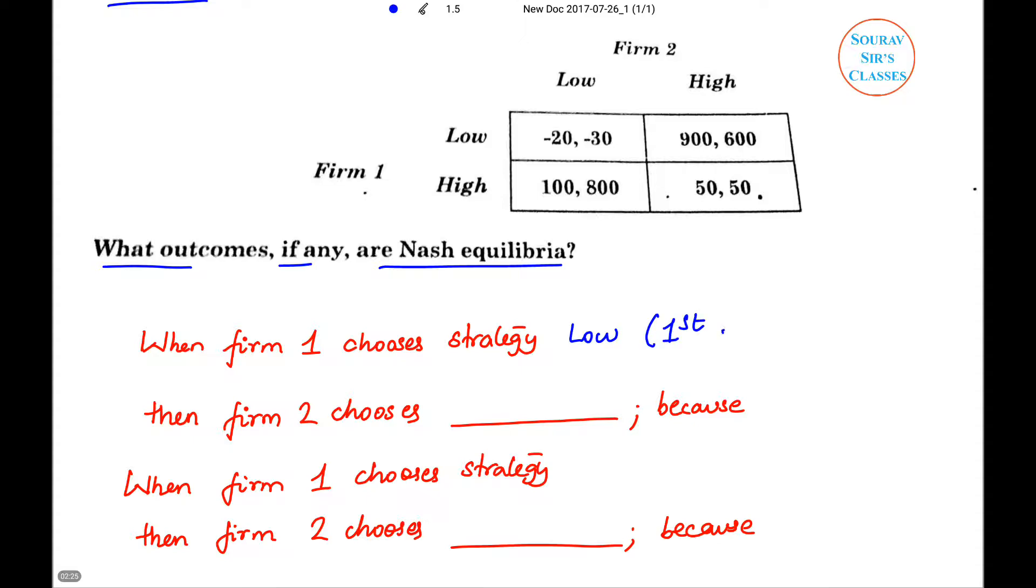Now let us see: when Firm 1 chooses strategy low, that means we are talking about the first row. The options available to Firm 2 are low and high. If he chooses low, he'll get a payoff of minus 30. If he chooses high, he gets a payoff of 600. Because 600 is greater than minus 30, he will end up choosing high strategy high.